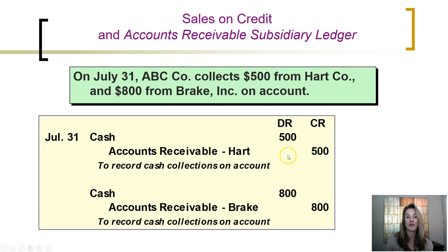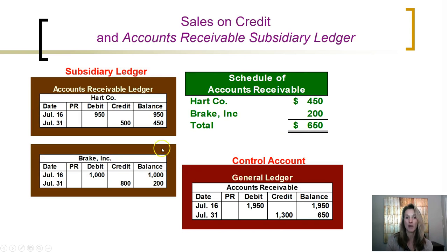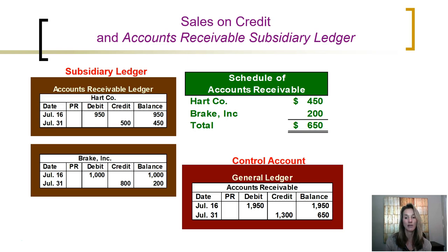So if ABC collects $500 from Hart and $800 from Break on their account, we are going to debit cash and credit accounts receivable. In the general ledger, we will be decreasing the accounts receivable controlling account by $1,300. We also need to update the customer accounts in the subsidiary ledger. Hart paid $500, bringing Hart's amount owed down to $450. Break paid $800, bringing the amount owed by Break down to $200. The total of the customer account balances in the subsidiary ledger are $650, which agrees with the balance in the accounts receivable controlling account in the general ledger.